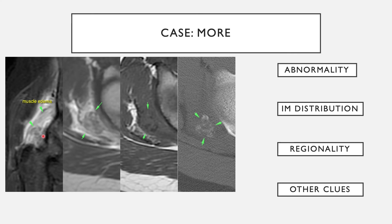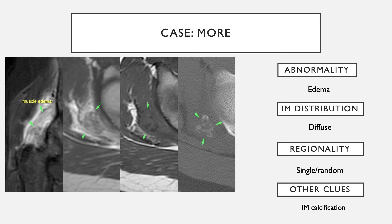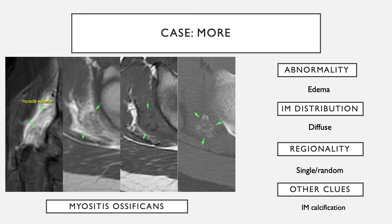In another case, there is diffuse muscle edema involving a single muscle. Looking carefully, there are slightly more heterogeneous irregular areas on T2 and T1 with dark areas, and CT shows calcification within this. If you have intramuscular calcification with extensive edema, you want to think about myositis ossificans. This is an example of myositis ossificans.